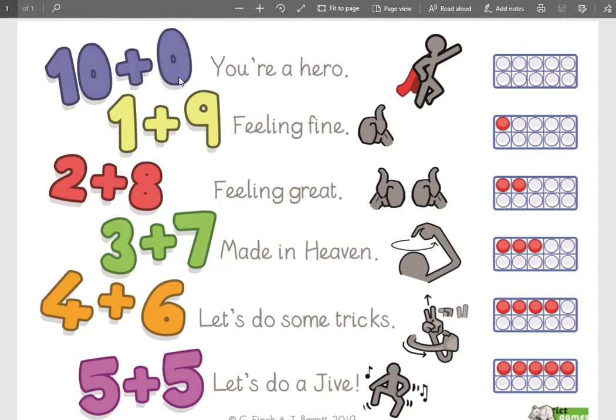I'll say it my turn, and then it's your turn. So I'm going to say it, and I want you to say it back. 10 and 0, you're a hero. Brilliant. 1 and 9, feeling fine. 2 and 8, feeling great. Are you saying it back? 3 and 7, made in heaven. 4 and 6, let's do some tricks. 5 and 5, let's do a jive. Brilliant. Now that's gone in, hopefully.